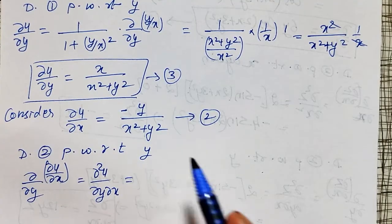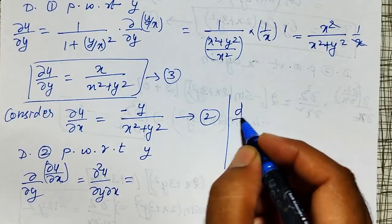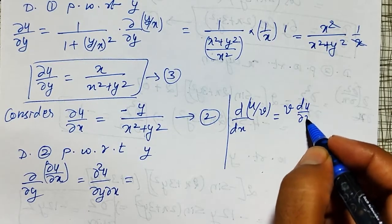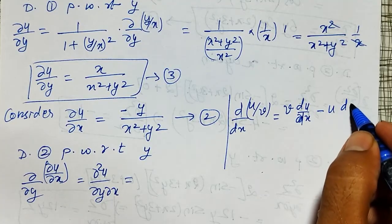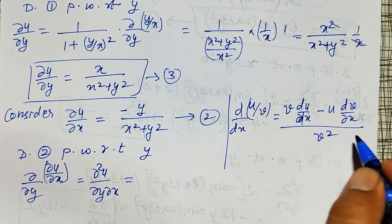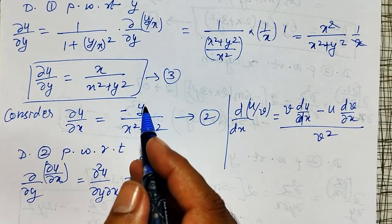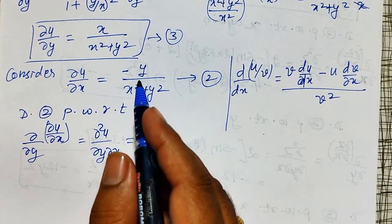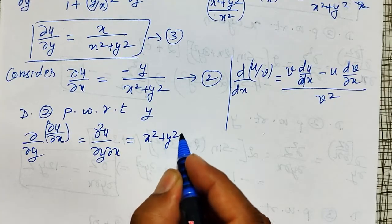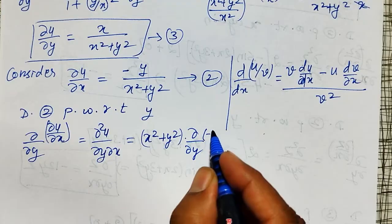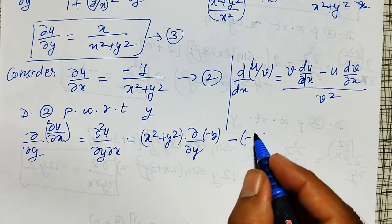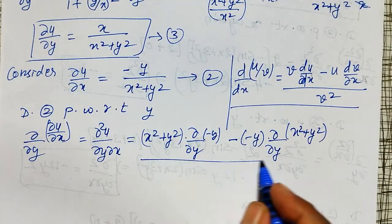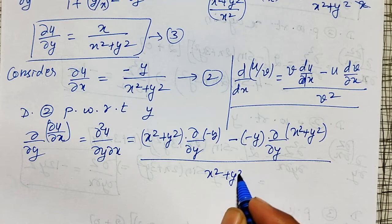The quotient rule states d/dx(u/v) = (v·du/dx − u·dv/dx) / v². Applying this with u = −y and v = x² + y²: ∂²u/∂y∂x = [(x² + y²)·∂/∂y(−y) − (−y)·∂/∂y(x² + y²)] / (x² + y²)².